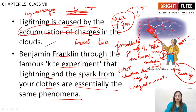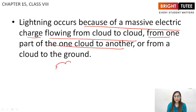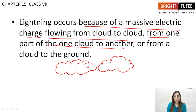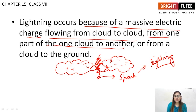Lightning occurs because of a massive electric charge flowing from cloud to cloud, or from one part of a cloud to another. Clouds carry charges, and when there is an electric discharge between clouds, a spark is generated — and this spark is seen as lightning. This may occur between one cloud and another, or between clouds and the ground, where a spark is also seen.